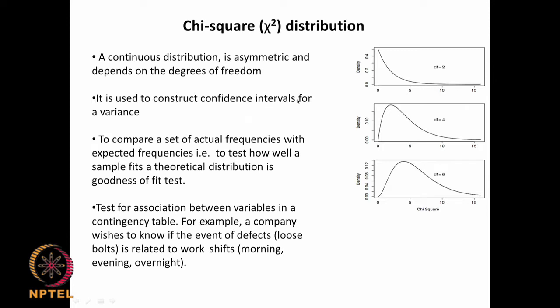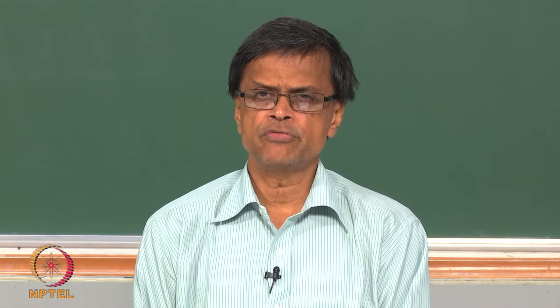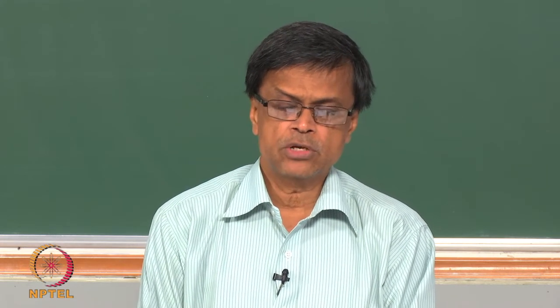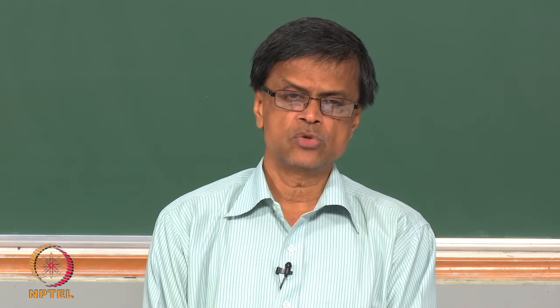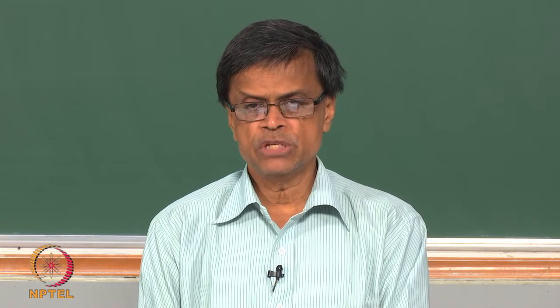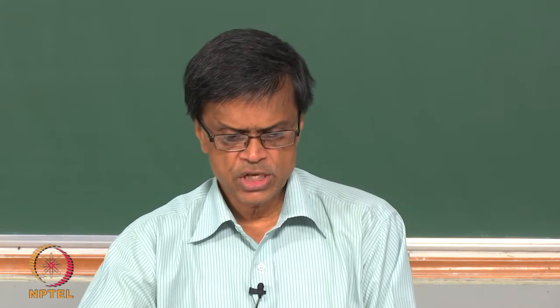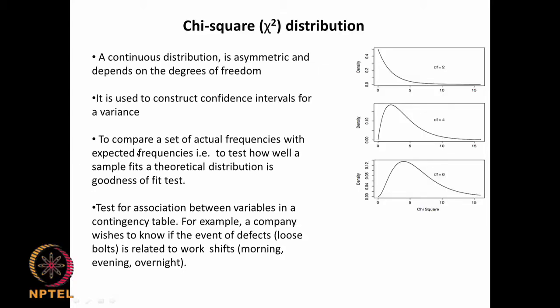Chi-square is used to construct confidence intervals for variance, and generally it is used for variance ratios. It can be used to compare a set of actual frequencies with expected frequencies — for example, comparing expected child mortality in a village versus current data to see if it is significant, or comparing expected defects when manufacturing bolts versus observed defects.